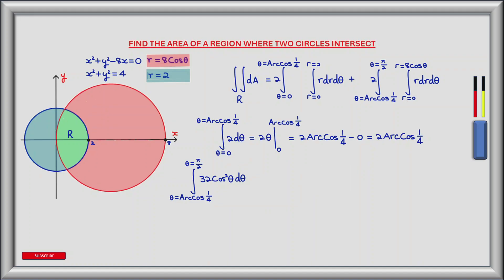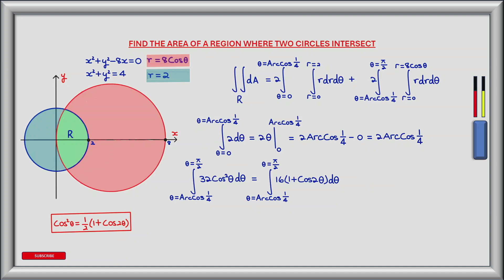For the first outer integral, we integrate from theta equals zero to theta equals arccos of a quarter of 2 d theta. The antiderivative of two is two theta, giving two times arccos of a quarter when evaluated. For the second outer integral, we integrate 32 cos squared theta from theta equals arccos of a quarter to pi by two. Using the trig identity cos squared theta equals one half times one plus cos two theta, this becomes the integral of 16 times one plus cos two theta d theta.